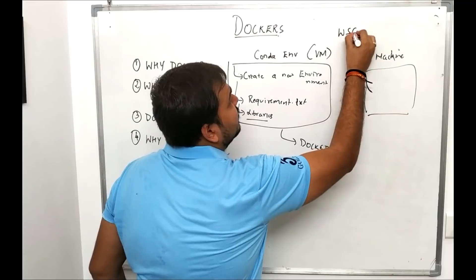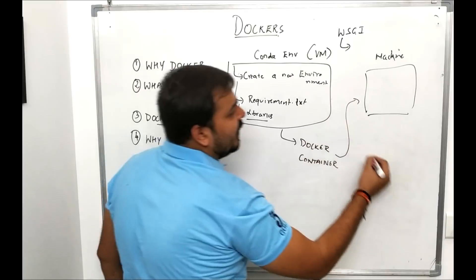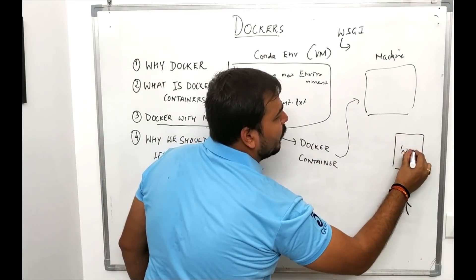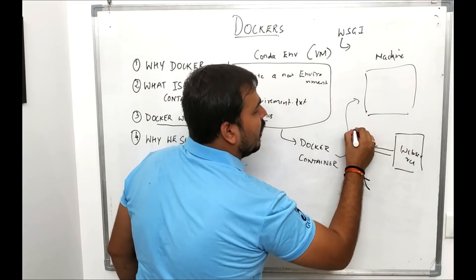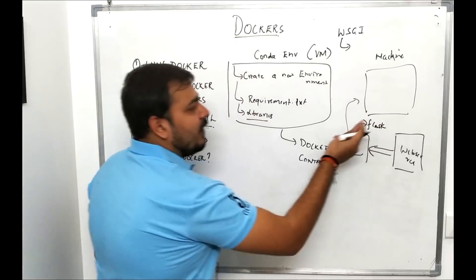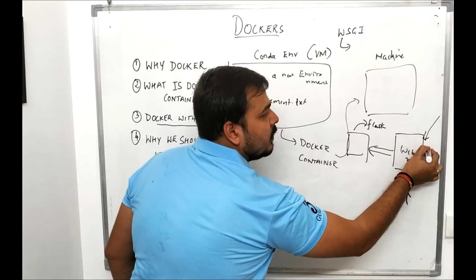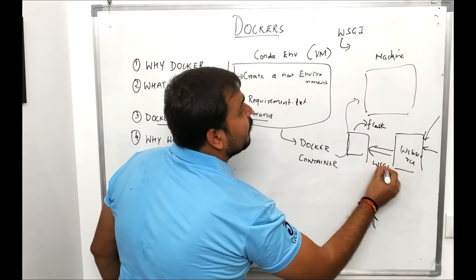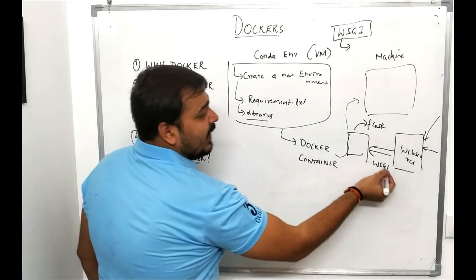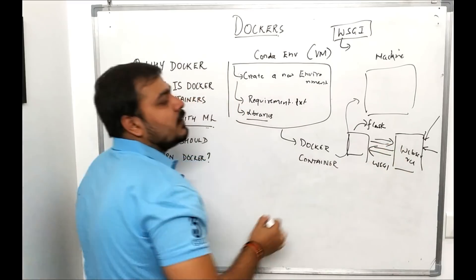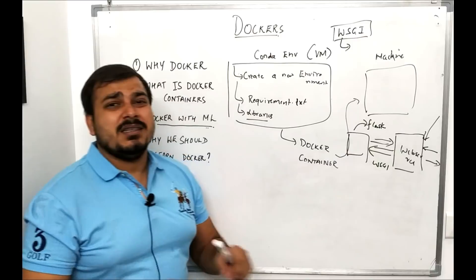There is also a very important file called WSGI — Web Server Gateway Interface. A web server communicates with our Flask app using this interface. Any request that comes in, the web server communicates through WSGI with the Flask app, gets the response, and sends it to the end user. We'll discuss more about this in upcoming videos.